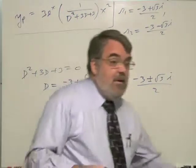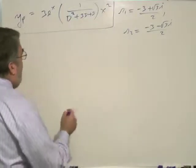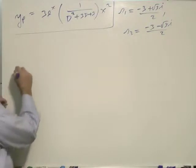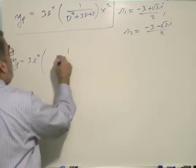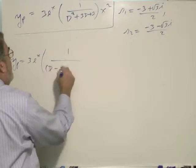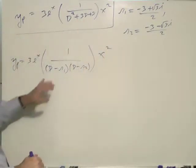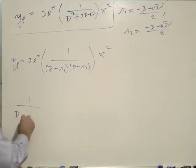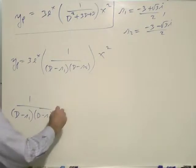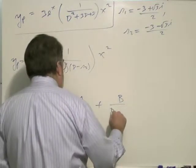This means we can rewrite y particular as 3e to the x times 1 over (D minus r1)(D minus r2), operating on x squared. Now we want to do a partial fraction expansion: 1 over (D minus r1)(D minus r2) equals A over (D minus r1) plus B over (D minus r2).